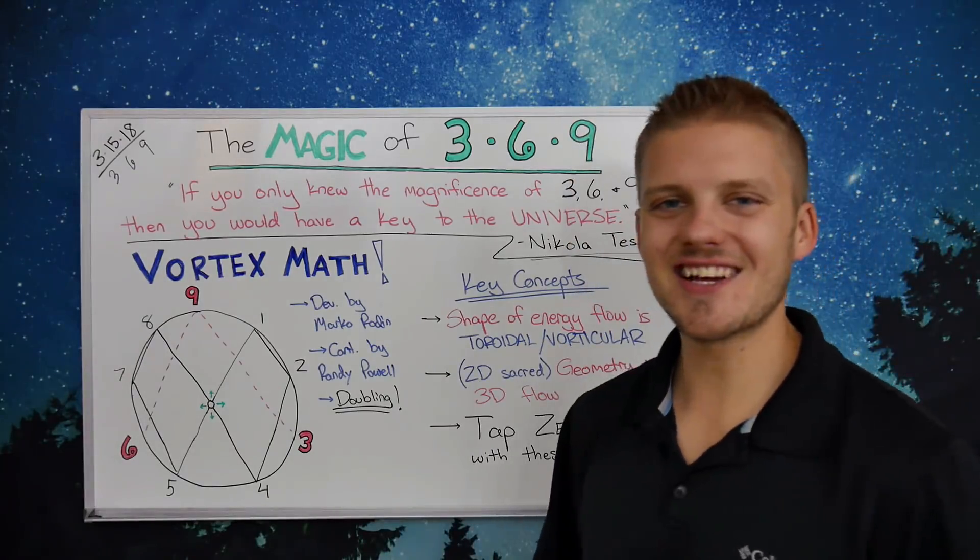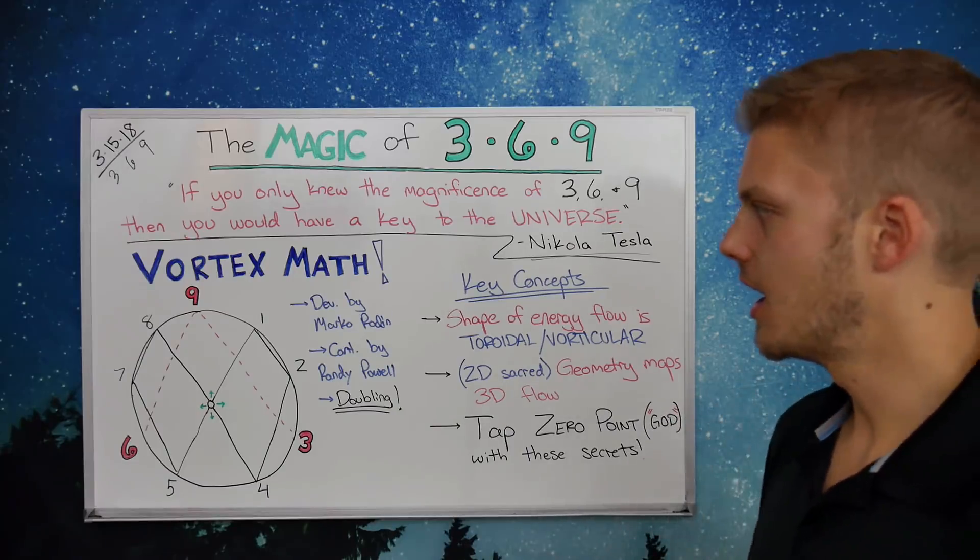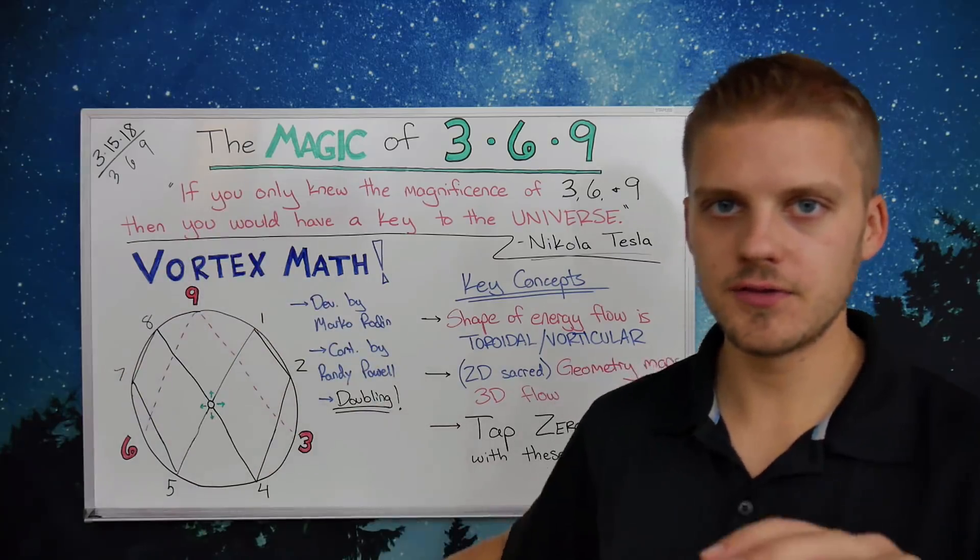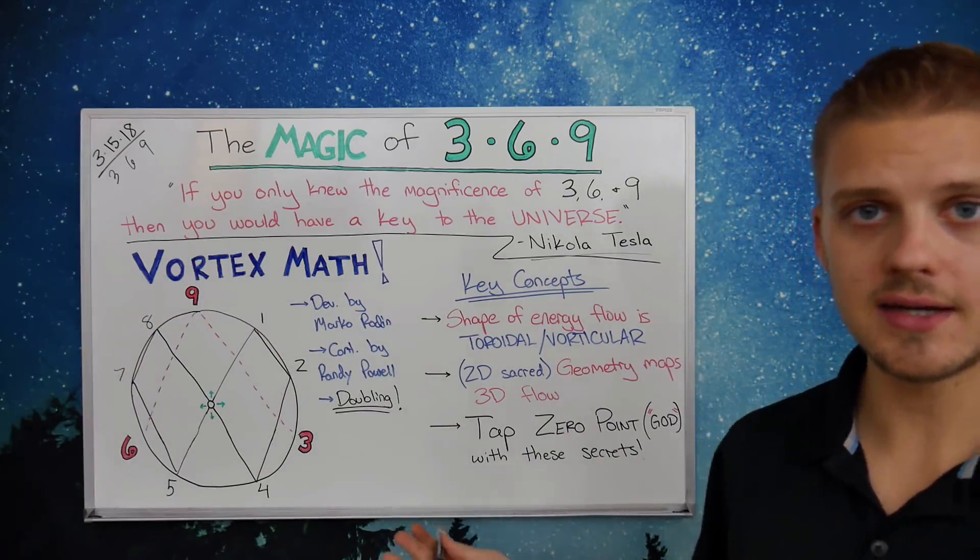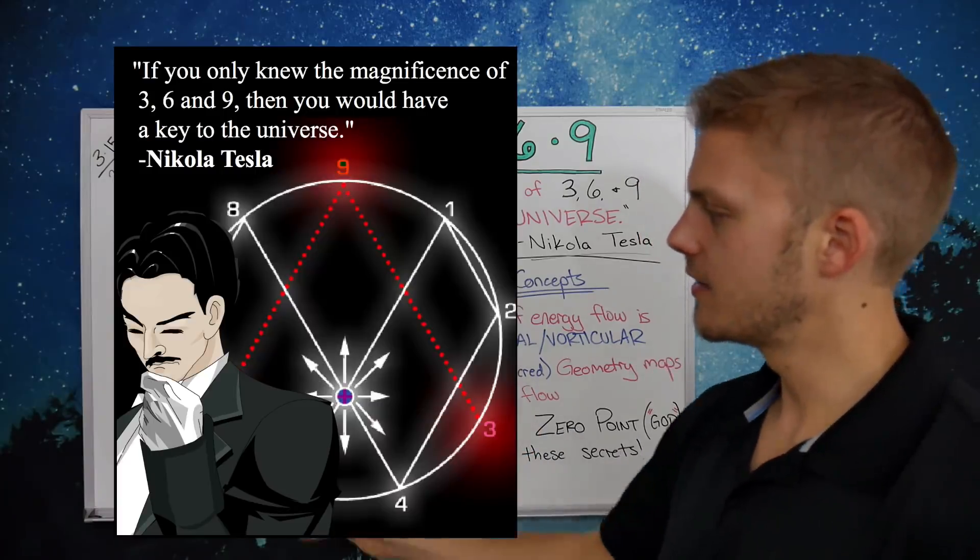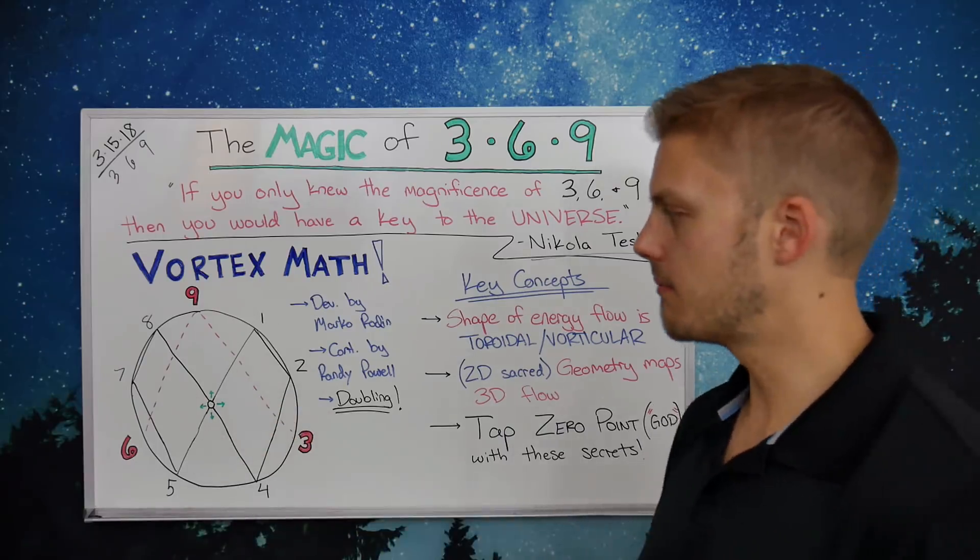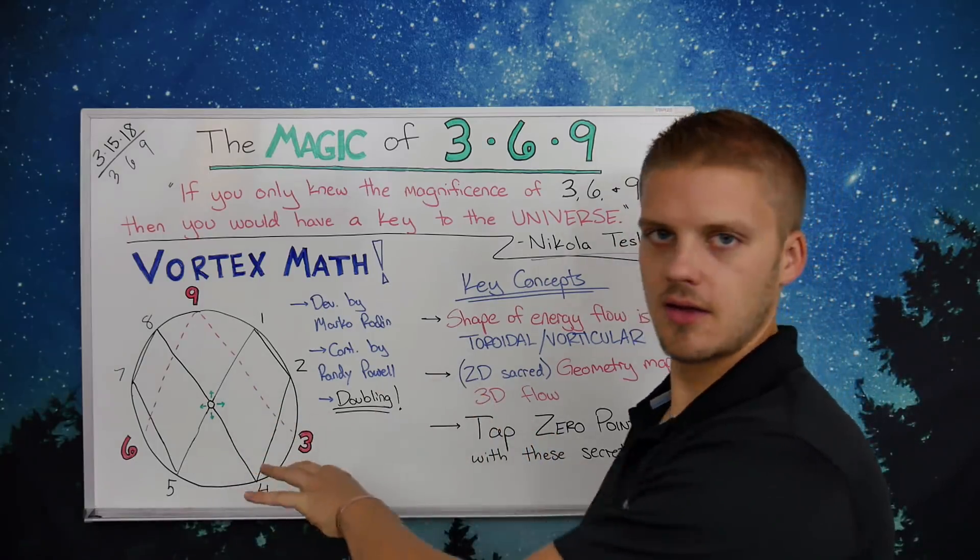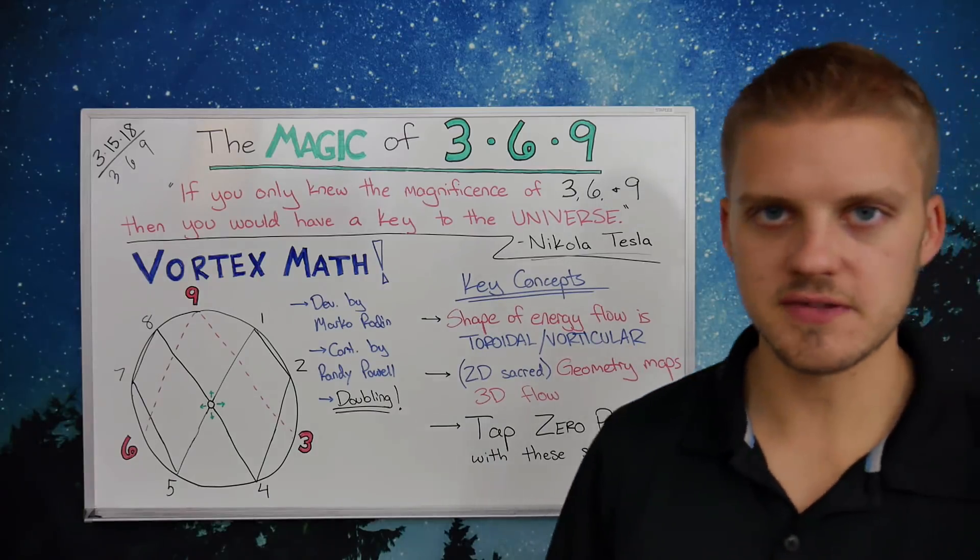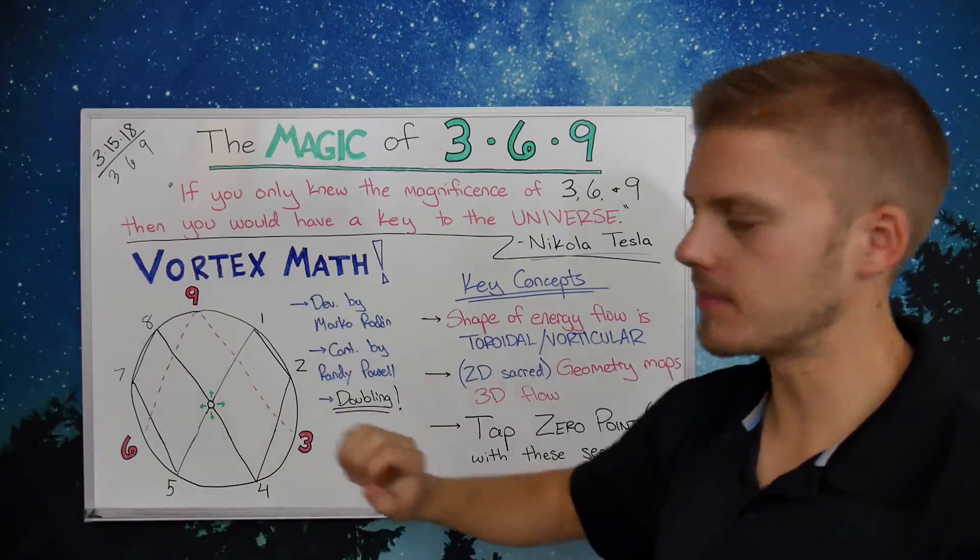So to discuss the magic of 3, 6, and 9, this particular numerology, I'm going to introduce to you a topic called vortex math. And if you saw that meme I posted with that Nikola Tesla quote, I'll show it to you right here, you actually saw the diagram of vortex math. But before we get into discussing that diagram a little bit more in depth, I want to go over with you two key concepts to prime your brain with so you can understand this a little bit deeper.